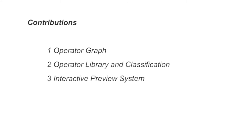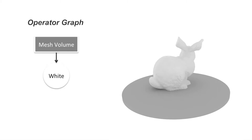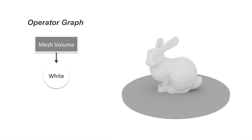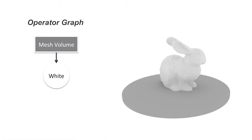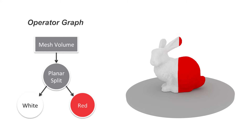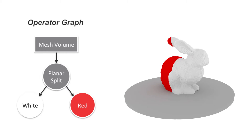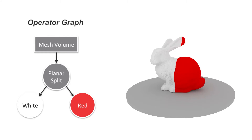Our contributions also include an operator library and classification that provides an intuitive workflow for complex hierarchical design, and an interactive preview system that enables printer-resolution design of complex hierarchical multiscale material structures. Similarly to shade trees, our operator graph represents local structural and material operations. We start with the example of a plain white Stanford bunny, which we split into two half spaces using a planar split operator, and each region is assigned a specific material composition.